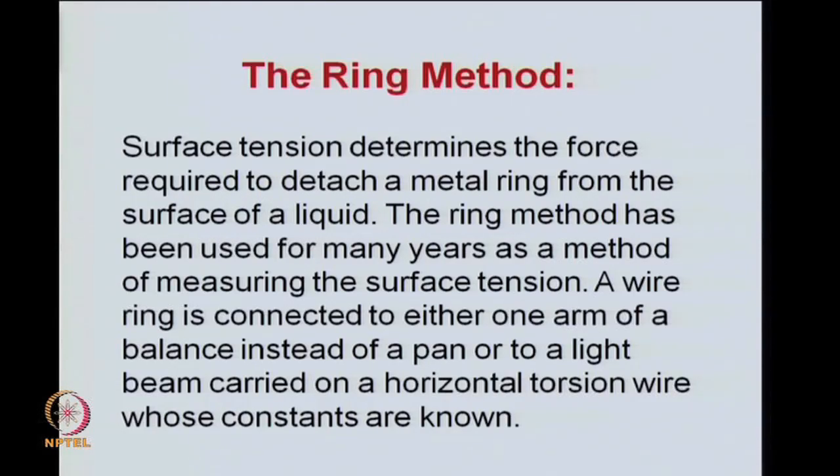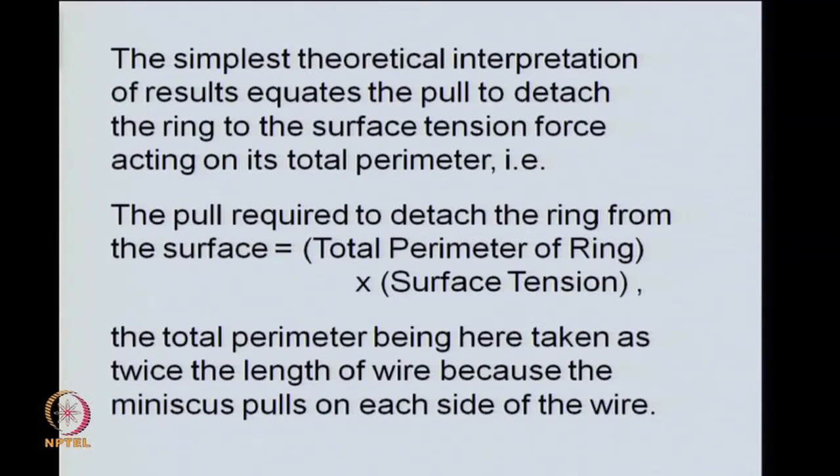Basically here you measure the force which is required to detach a metal ring from the surface of a liquid and is one of the oldest methods used for measurement of surface tension and interfacial tensions as well. A wire ring connected to either an arm of a balance or to a torsion wire through a light weight beam could facilitate the measurement of this vertical pull required to snap the ring of the liquid.